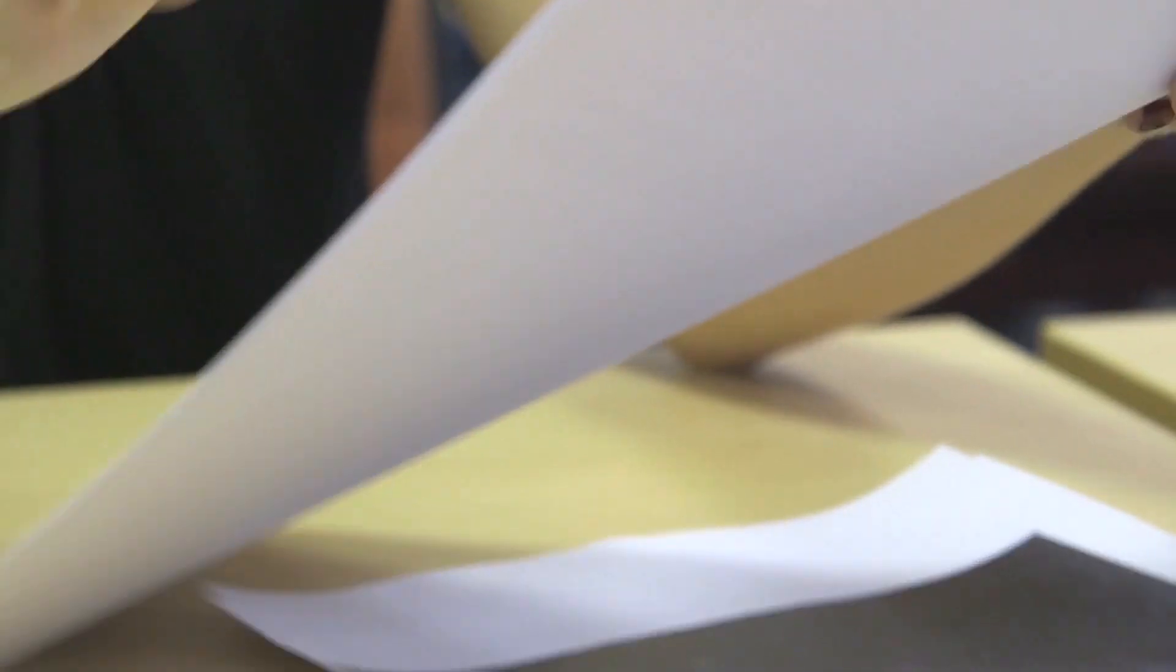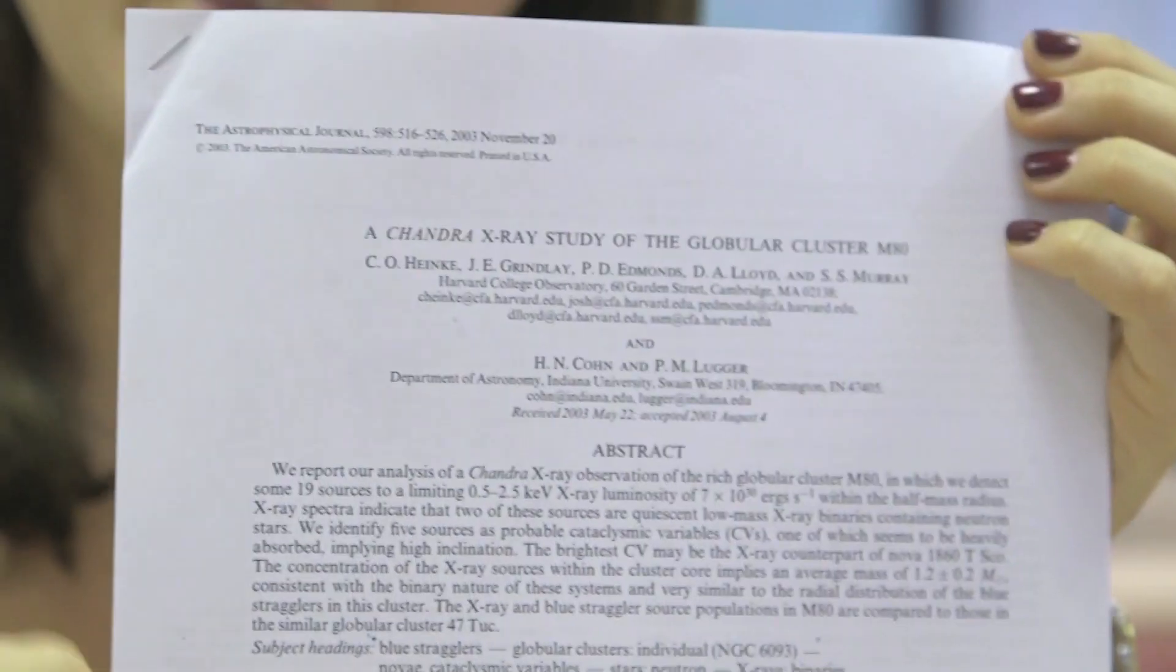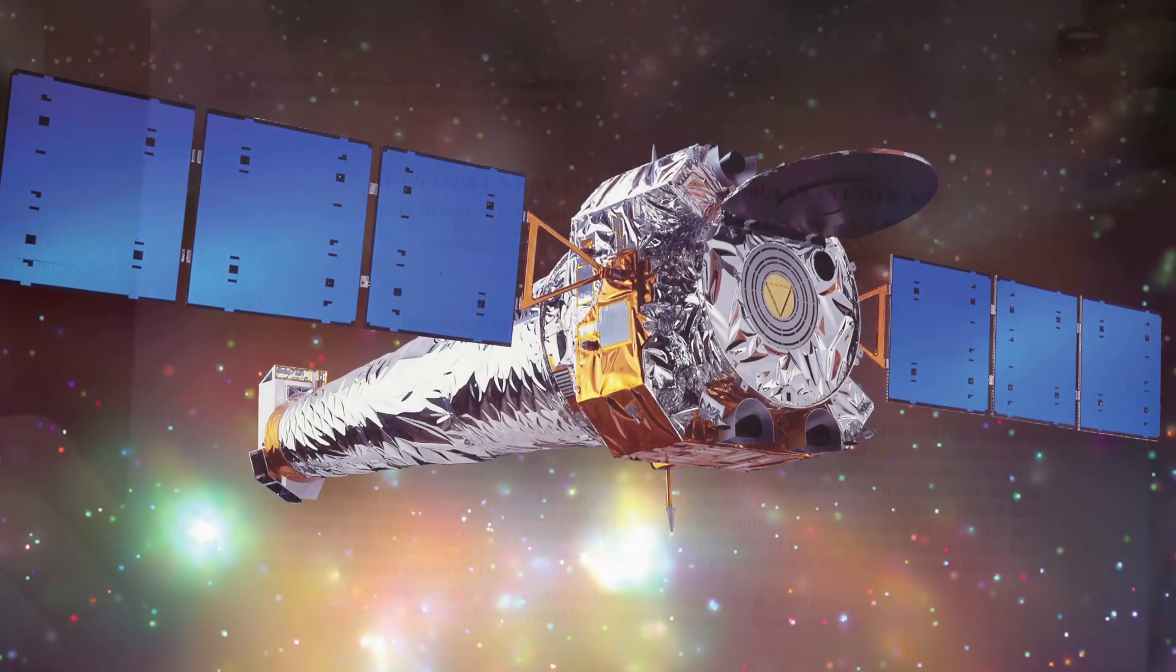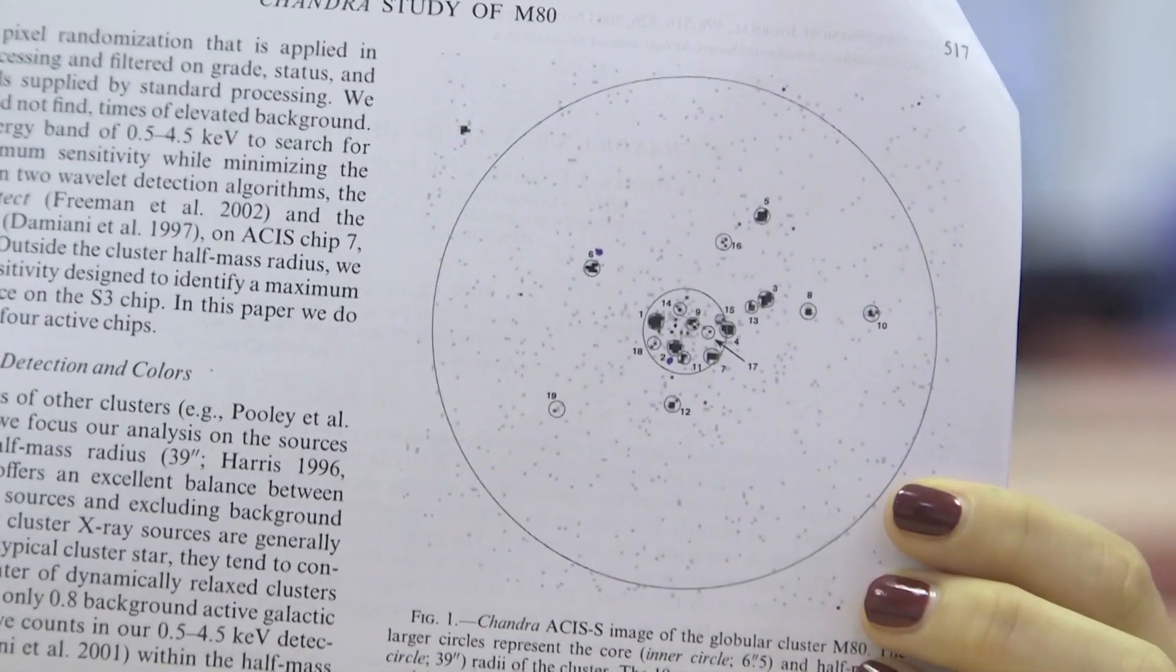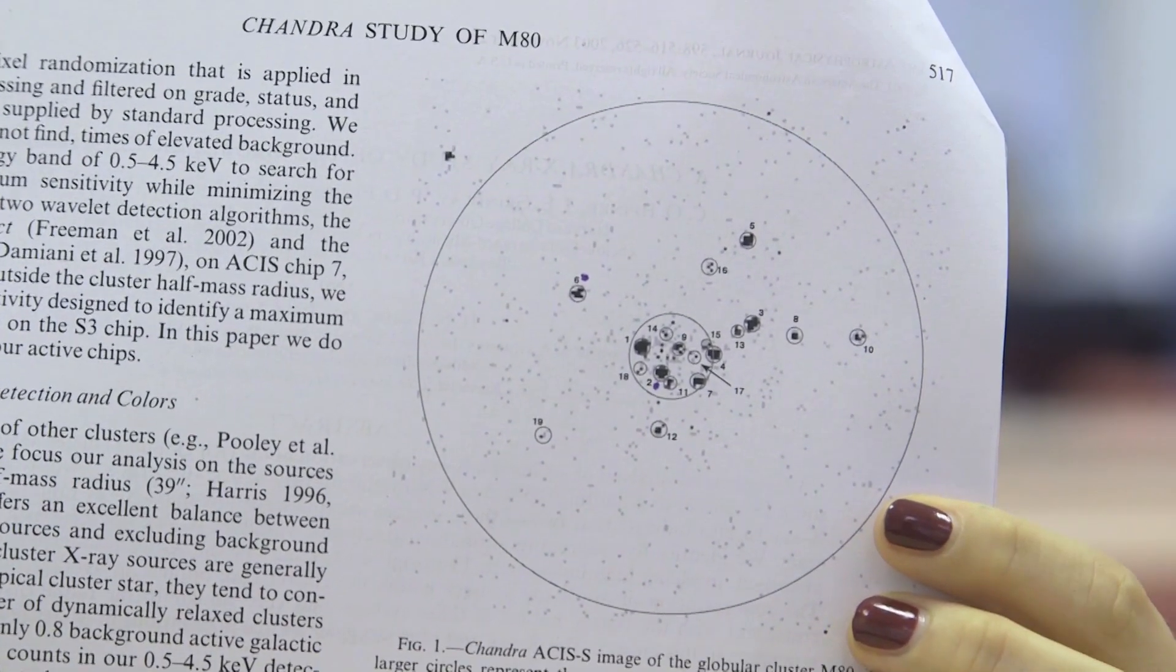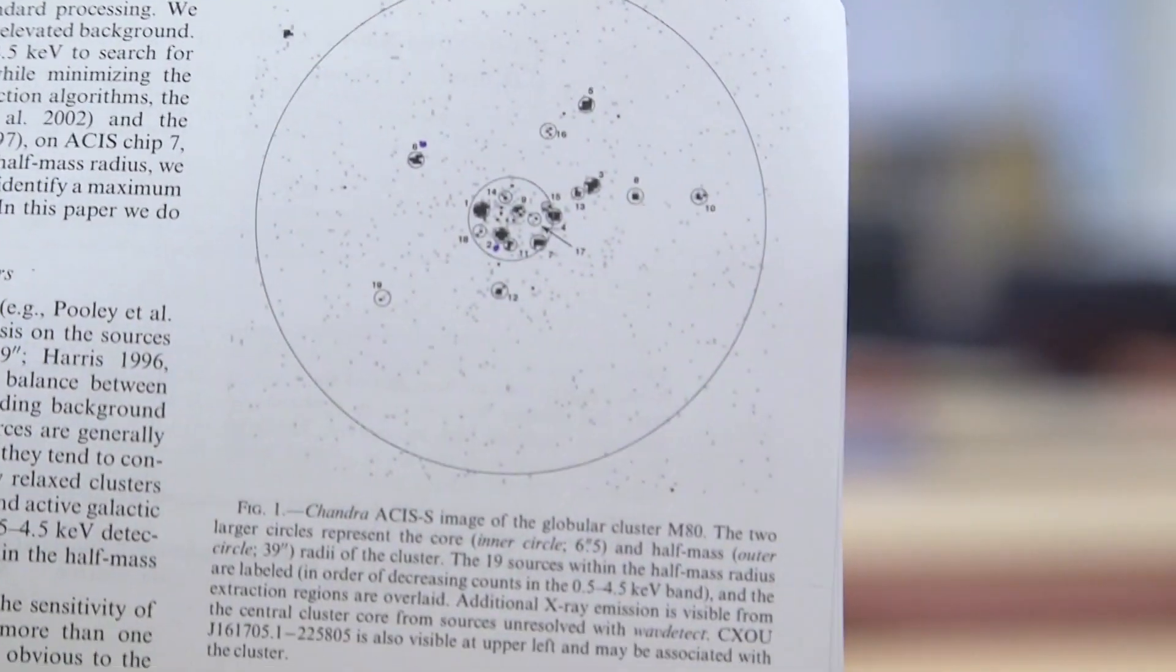So I found this paper from 2003, Heinke et al. And they used the Chandra X-ray telescope to look at M80. So they're literally X-raying this globular cluster. This is the image that they got of M80. It's kind of boring, but it is a picture of this globular cluster in X-rays.